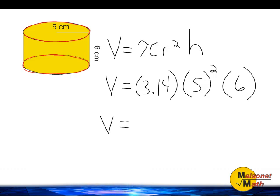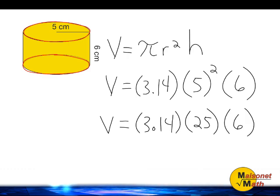Next, we are going to take our radius and raise that to the second power. And 5 to the second power is 25. You must remember to perform any exponents before doing any multiplication, according to the order of operations.